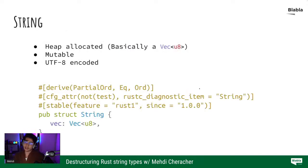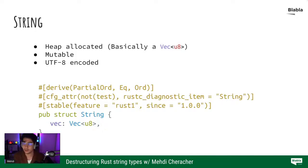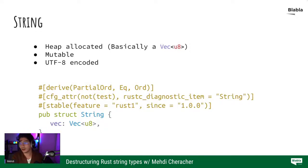With that out of the way, let's start with our first type, which is the String. This is a standard library type. It's heap allocated. In Rust you have total control — you can store objects on the stack and you can store them on the heap. The String type, like in Java, is a heap object, which means you get a pointer that actually points to the actual data. The data itself lives on the heap and the pointer lives on the stack.